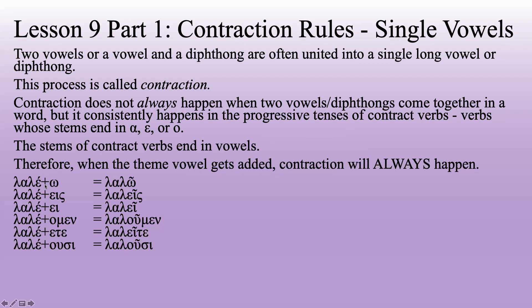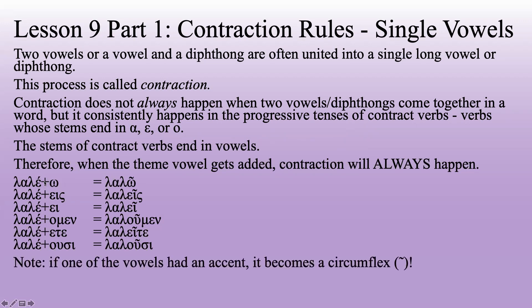Technically speaking, if the vowel had an accent to begin with and then it gets contracted, it will now have a circumflex instead of whatever accent it had previously. Not always will it have a circumflex — because if there was no accent there to begin with, the accent will probably stay wherever it was. But if there was an accent, it has to change into a circumflex, which is a nice clue that you have contraction.